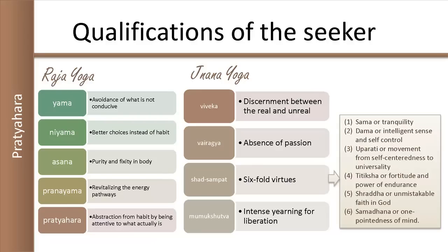Vairagya or absence of passion. Shadsampata are the six virtues which include shama or tranquility, dhamma or intelligent control of the organs of sense and action. Uparati or the movement from self-centeredness to universality — which by the way is pratyahara here. Titiksha or fortitude and power of endurance. Shraddha or unmistakable, unshakable faith in God. And Samadhan or one-pointedness of mind. Those six make up the third of the four called shadsampata or the six virtues. And then you have mumukshutva or intense yearning for liberation from samsara, the never-ending cycle of birth, existence and death. This comes later in one of the sutras of Patanjali when he talks of Thivramsamvegatva.